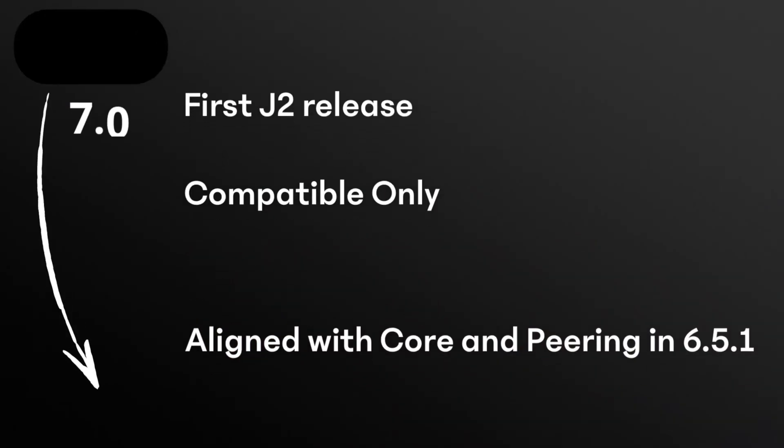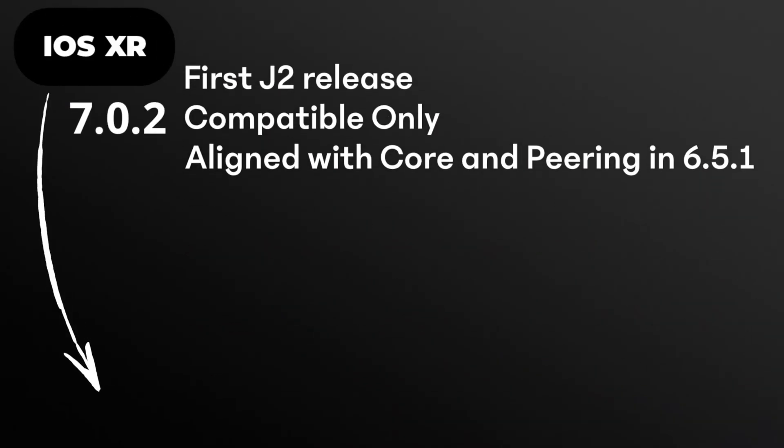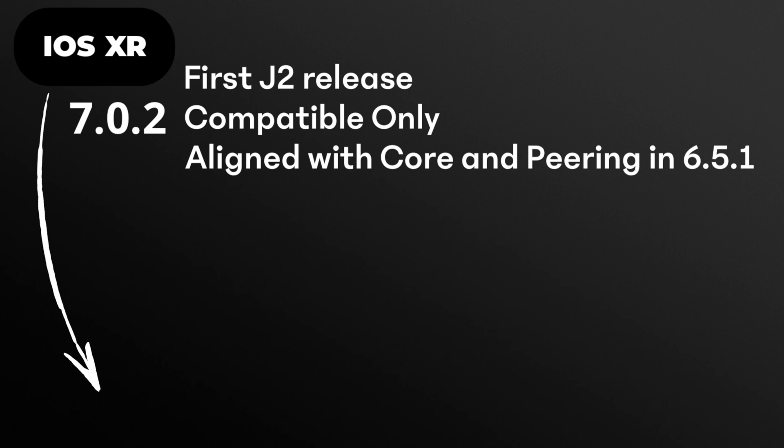Now let's talk about feature support — it will be important to pay attention to these details, at least during the next couple of releases. Not all features are supported day one on Jericho 2 line cards and in all operation modes. It's a phased approach that started with IOS XR 7.0.2, where the first J2 line cards were introduced with compatibility mode only. To meet the most pressing customer requirements and frequent use cases, we started with core and peering features, selecting J Plus capabilities in 6.5.1 as the reference point.